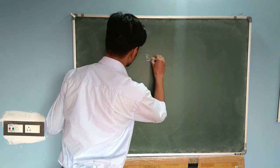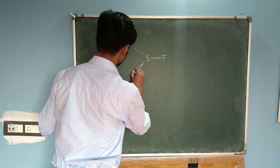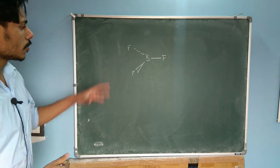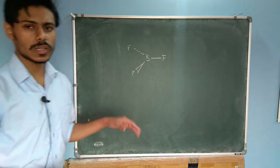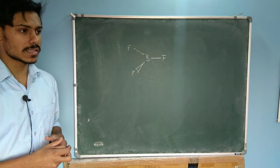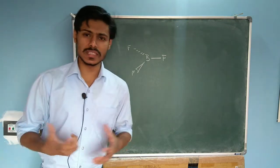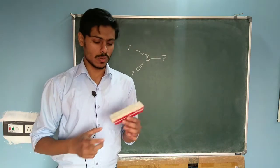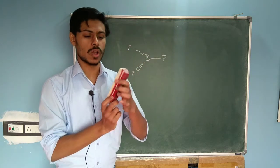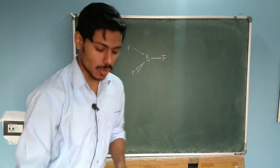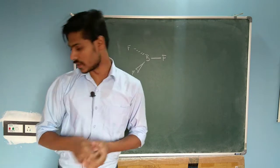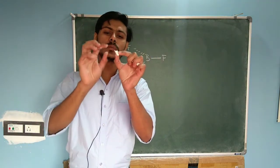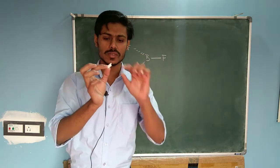I want to begin by introducing you to this very simple molecule, BF3, drawn in the flying wedge projection formula. What is meant by symmetry? Symmetry means the molecule has some special property. For example, this duster has a certain symmetry — if you bisect it you get two equal halves, or if you rotate it you get the same arrangement. But if you take a broken piece of chalk and rotate it, you will not get the same arrangement, so it doesn't have symmetry.